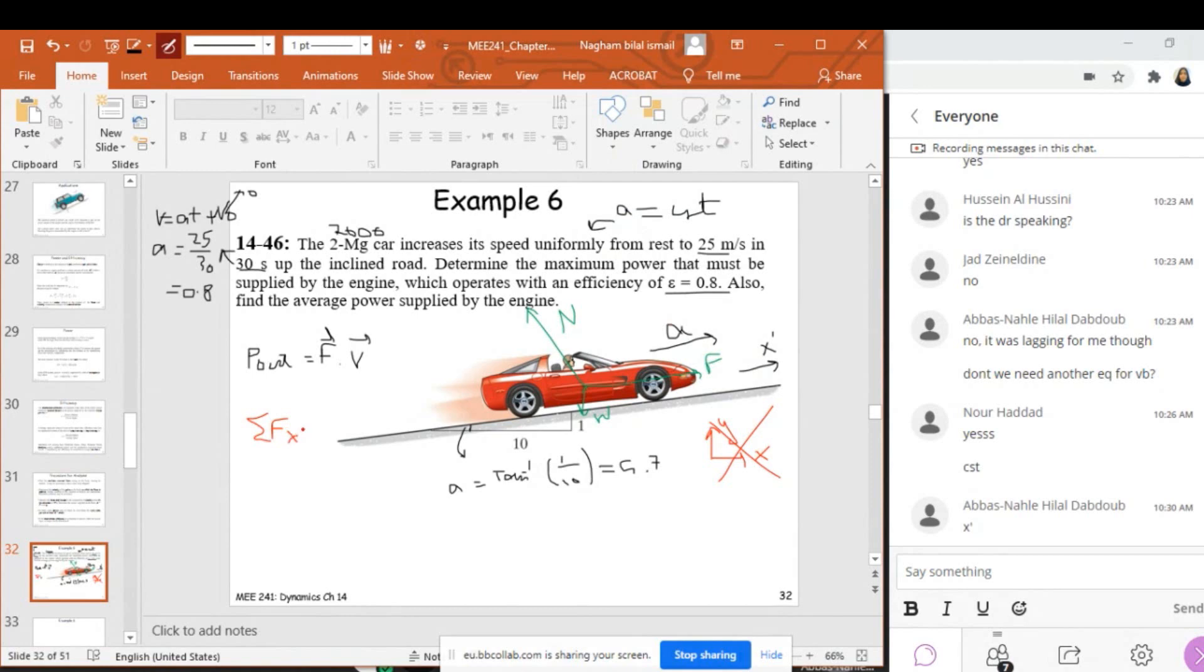This means the forces are: F minus the weight in negative direction times sine 5.7°, and the normal is perpendicular to x-prime so it doesn't have any projection. This equals m times 0.8.